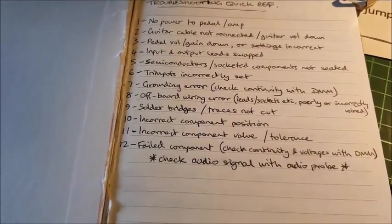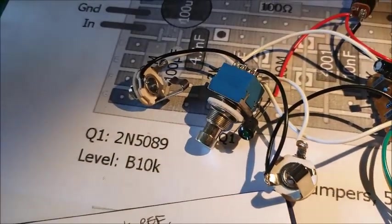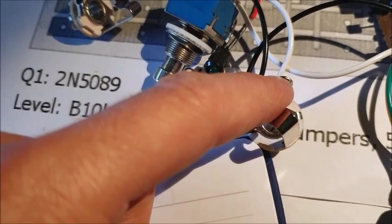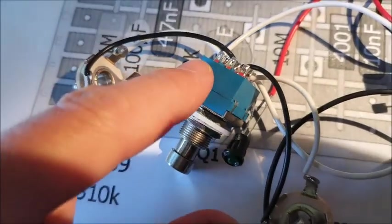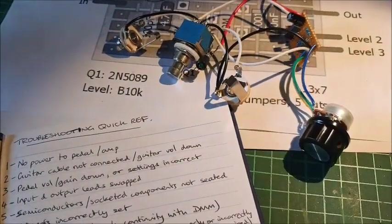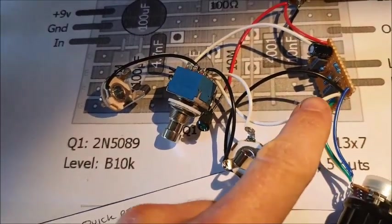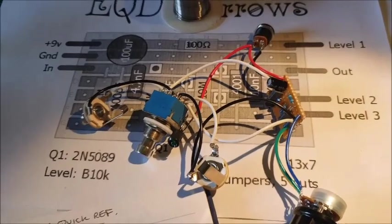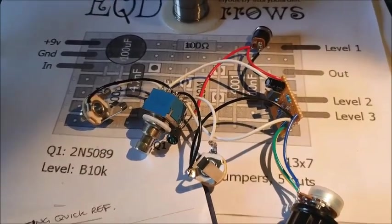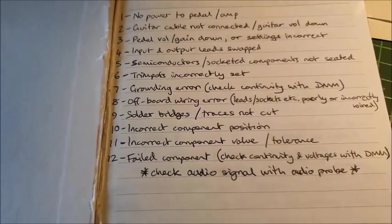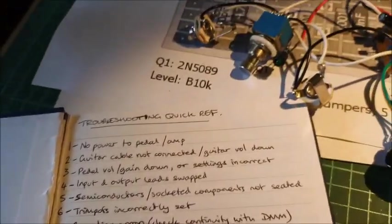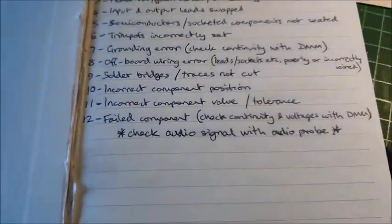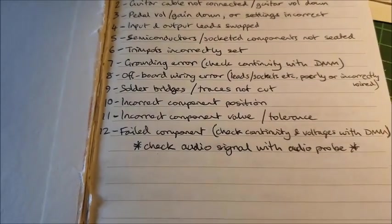Stuff can. Really. Make a difference. And be common. You can always check. Check continuity with a. Multimeter. So. Offboard wiring errors. So leads going to the wrong places. Number nine. Solder bridges and traces not cut. So that's problems with. Stuff going on on the board. Number ten. Incorrect component position. So you've. Put the components in the wrong place. Number eleven. The components. The wrong value or tolerance. With resistors that look very similar. Or the same. It's really easy to. Make that mistake. If you don't test them. So you can have. A really large resistor in place. A really small one. Or vice versa. And all stuff. Your circuit up.